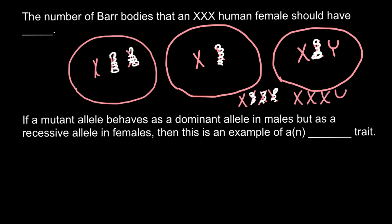Another example could be XXXXY. This is going to be a male, because whenever we have a Y chromosome in the nucleus this is going to be phenotypically male. But here we would also see two Barr bodies.